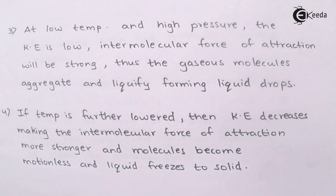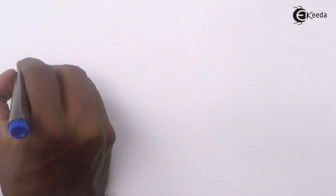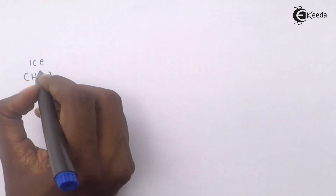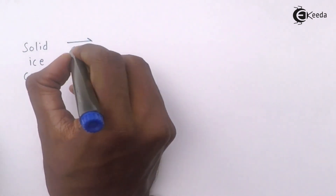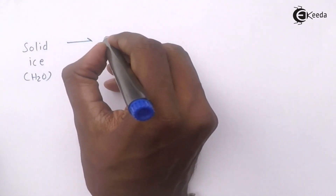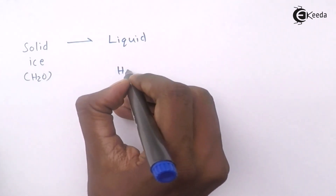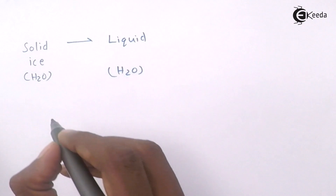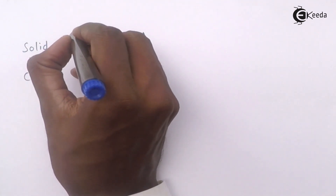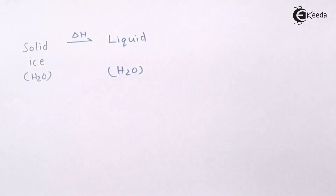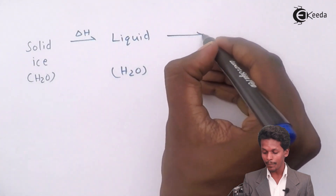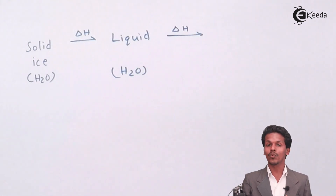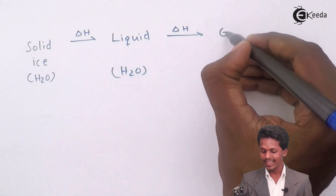Let me give you an example of ice to make this concept very clear. Ice is water in a solid state. If I increase the temperature, the ice in the solid state will convert into a liquid state — that is water. If I increase the temperature further, the intermolecular force will decrease and it will convert into a gas — that is water vapor.